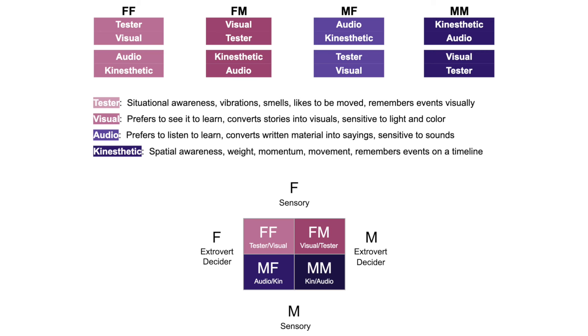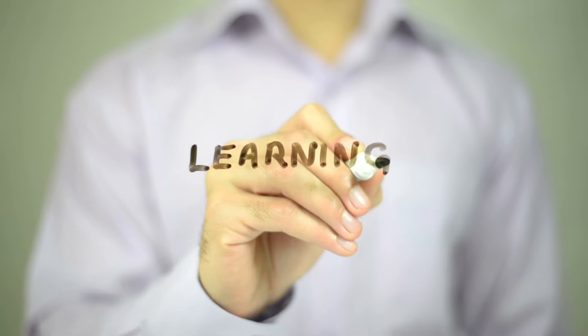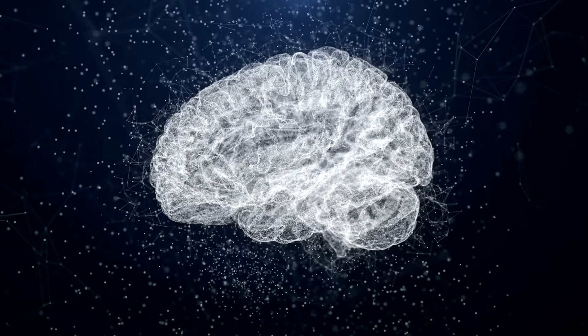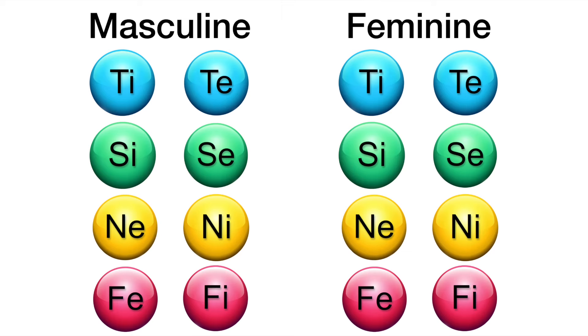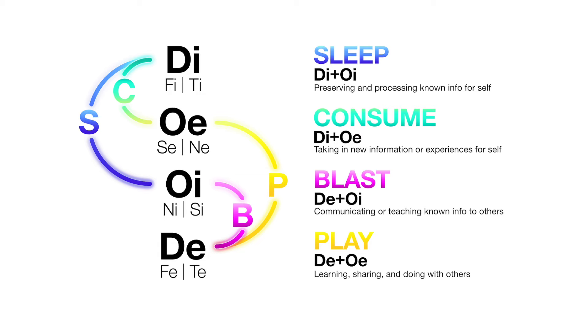In this video specifically, you will learn the four different sexual modalities, which influence someone's learning style, memory, and polarity of their cognitive functions and animals. Let's start off with the learning styles and memory.